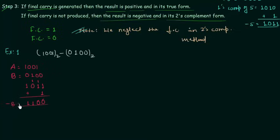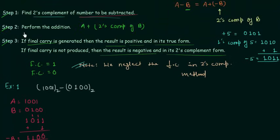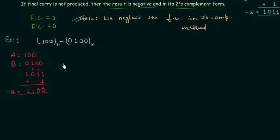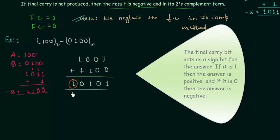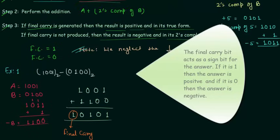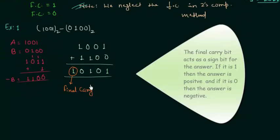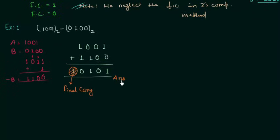Now we will move to step number two and perform the addition. A is 1001 and minus B is 1100. Adding them: 1 plus 0 is 1, 0 plus 0 is 0, 0 plus 1 is 1, and 1 plus 1 is 0 with final carry equal to 1. The final carry is equal to 1. From step number three, when final carry is generated — when final carry is 1 — the result is positive and in its true form. So we neglect this final carry and we have 0101. This is positive and in its true form, so simply this is our answer.